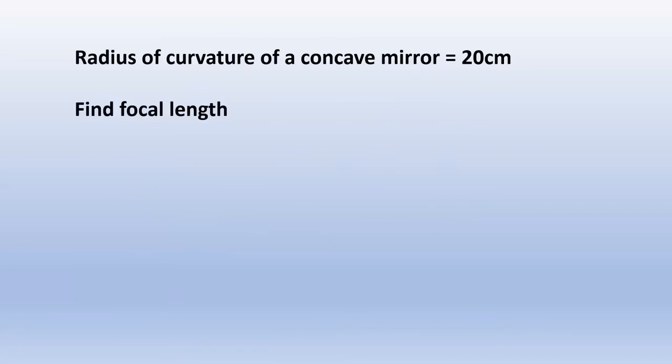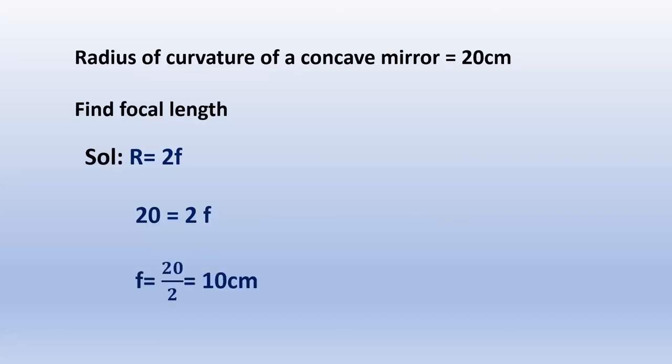Let us solve a numerical. Radius of curvature of a concave mirror is 20 centimeters. Find the focal length. We know r = 2f. Substituting the value: 20 = 2f, so f = 20/2 = 10 centimeters.